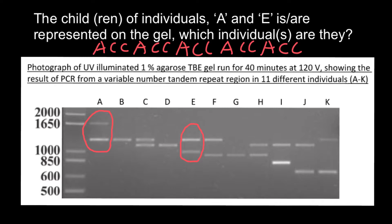So yes, one parent can give this size allele and the other parent can also give this size allele, and we see only one band here. So we can circle this genotype — person B can be the child of these two people.